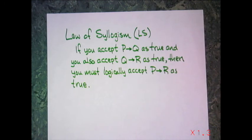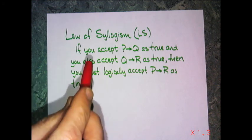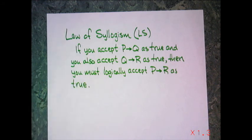This is known as the law of syllogism. And that's a good Scrabble word for you. If you accept P then Q is true, and you also accept Q then R is true, then you must logically accept P then R as true.